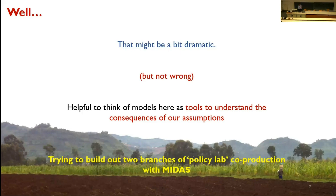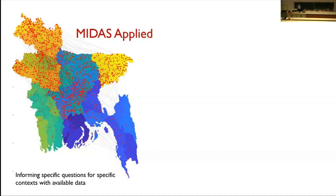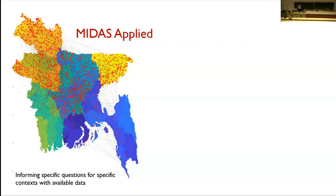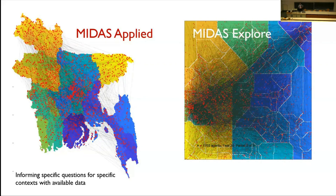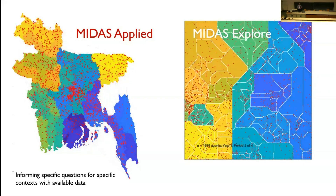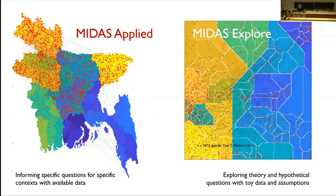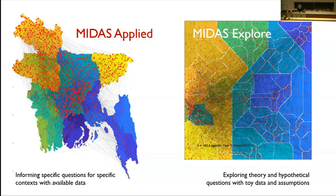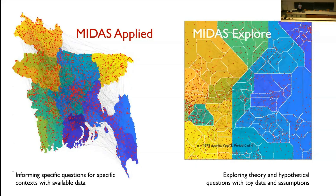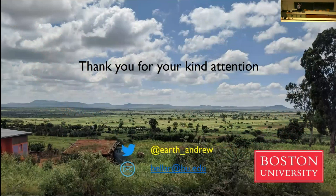That's put us in a position to build out in two directions. On one hand, we're interested in MIDAS Applied — developing specific model applications for specific places with specific datasets to inform our understanding of applied problems. At the same time, our modeling tools let us generate synthetic worlds with synthetic conditions and ask more abstract questions: what happens when people have access to this but not that, or when there are local economic hubs versus when there aren't? There are lots of opportunities to explore abstract hypothetical questions using toy models. Our hope in coming here is that for anyone interested in building something like this into their work — maybe a chapter, maybe something to contextualize other research — we'd be excited to be involved. Please be in touch if this is helpful.